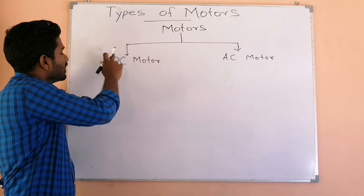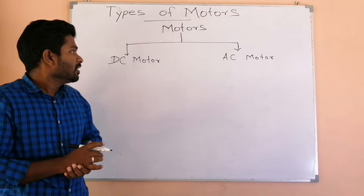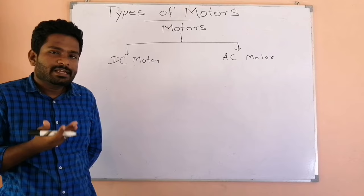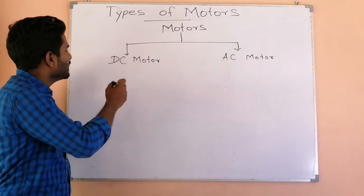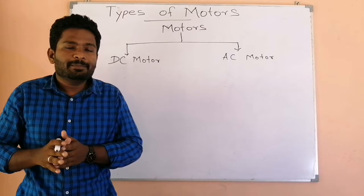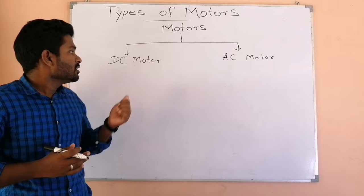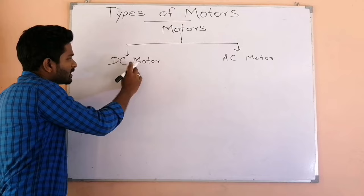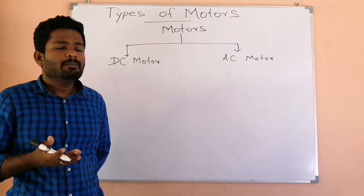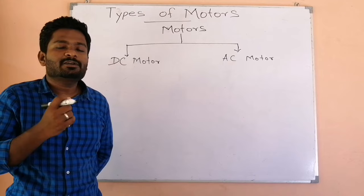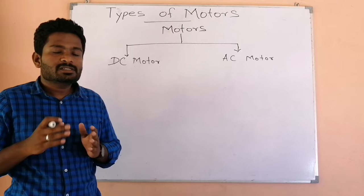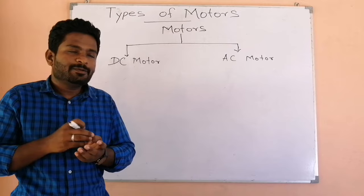Now, what are the types of DC motor? One way we can divide DC motors is as permanent magnet or temporary magnet. Some motors use permanent magnets and some use temporary magnets, but in most cases we use temporary magnets, which means electromagnets.